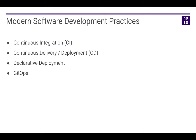Before we go through how Dispatch works, let me provide you some background knowledge about the modern software development practices that drive the design of Dispatch. We have a couple of concepts here: first, continuous integration, also known as CI; second, continuous delivery or deployment, known as CD; then we have declarative deployment; and finally, GitOps. I'm going to go through these concepts in the next couple of slides.